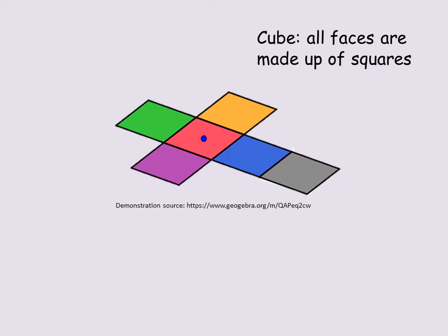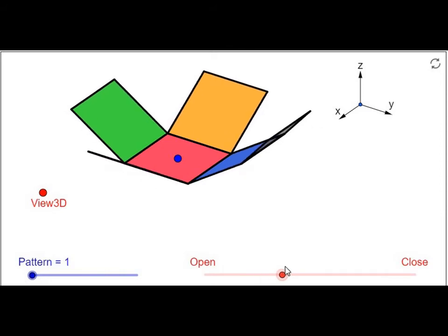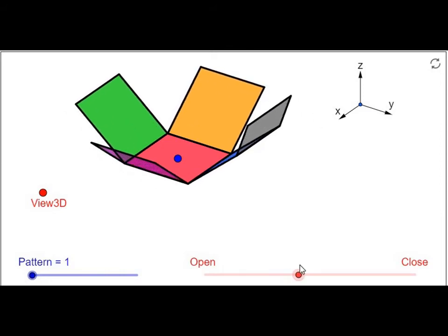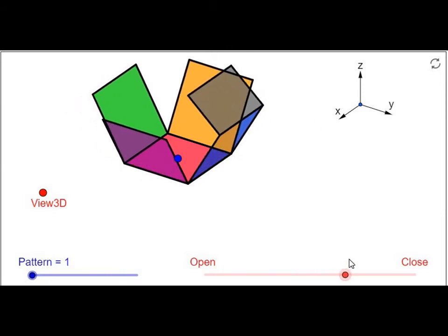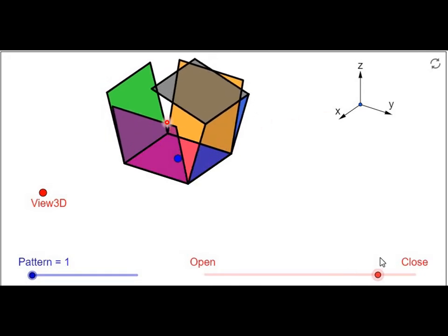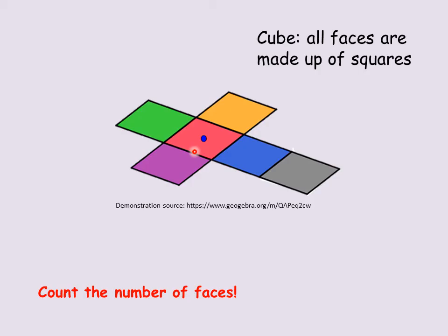Let us count to see the number of faces in a cube. How many surfaces does a cube have? Let's count: one, two, three, four, five, six — you can see the different colors. So there are six faces in a cube.